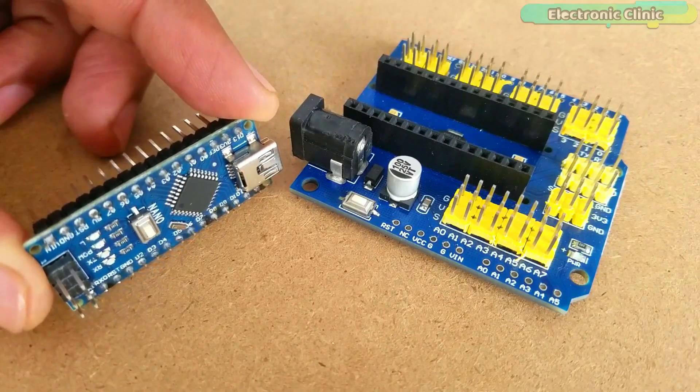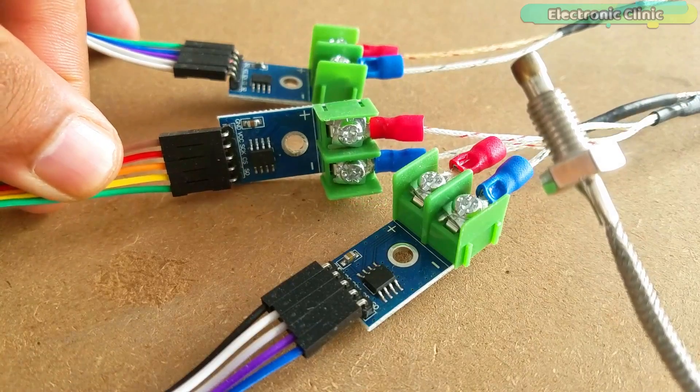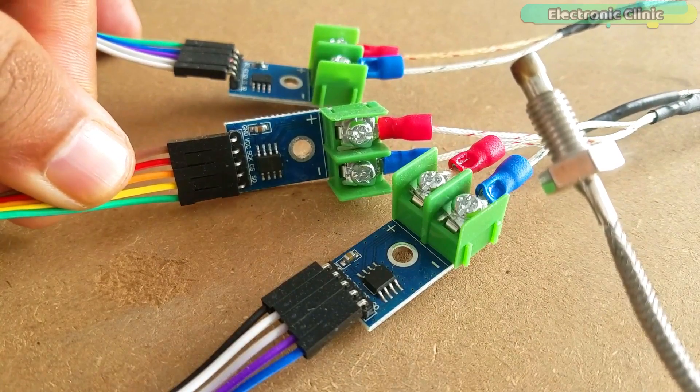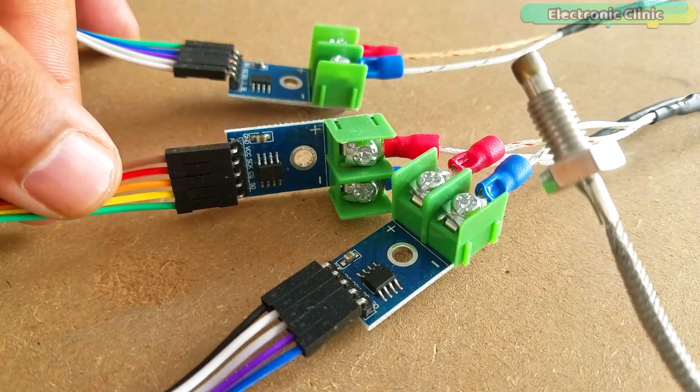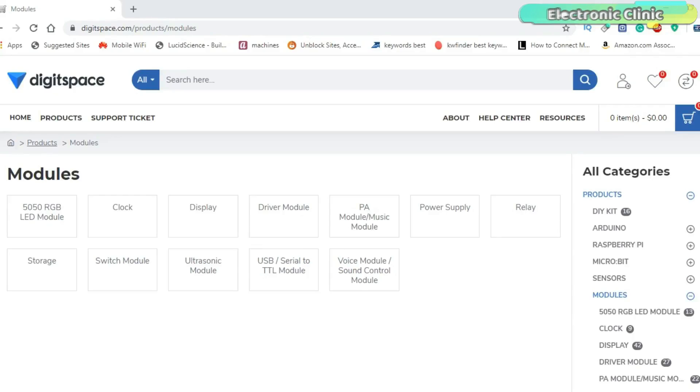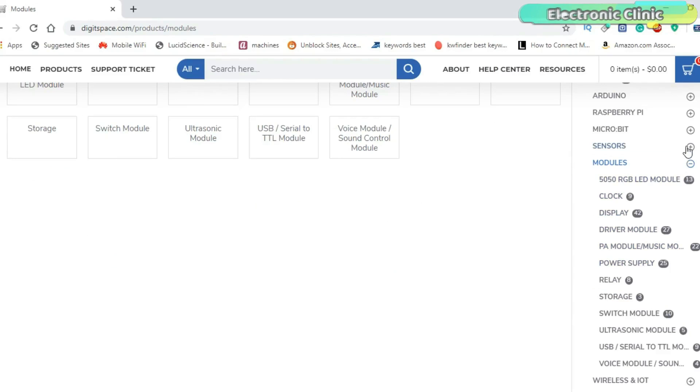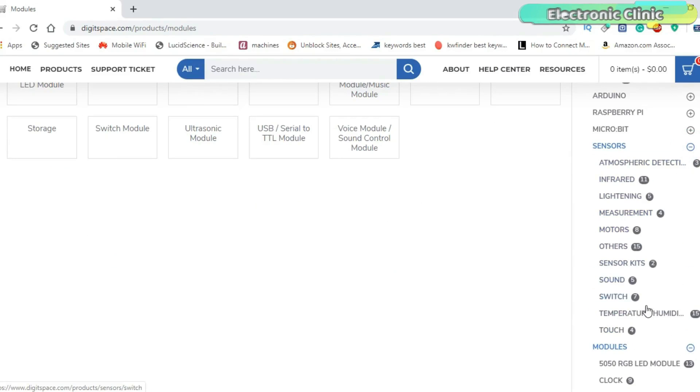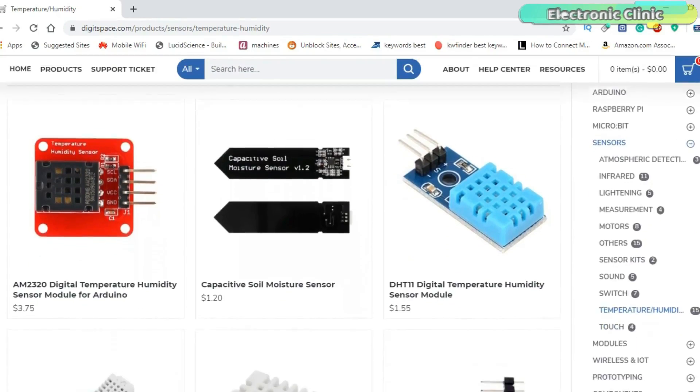The Arduino Nano, I-O shield and temperature sensors used in this video are sponsored by Digitspace. Digitspace is an open source hardware provider. They supply innovative, user-friendly, open source hardware products at extremely low prices.